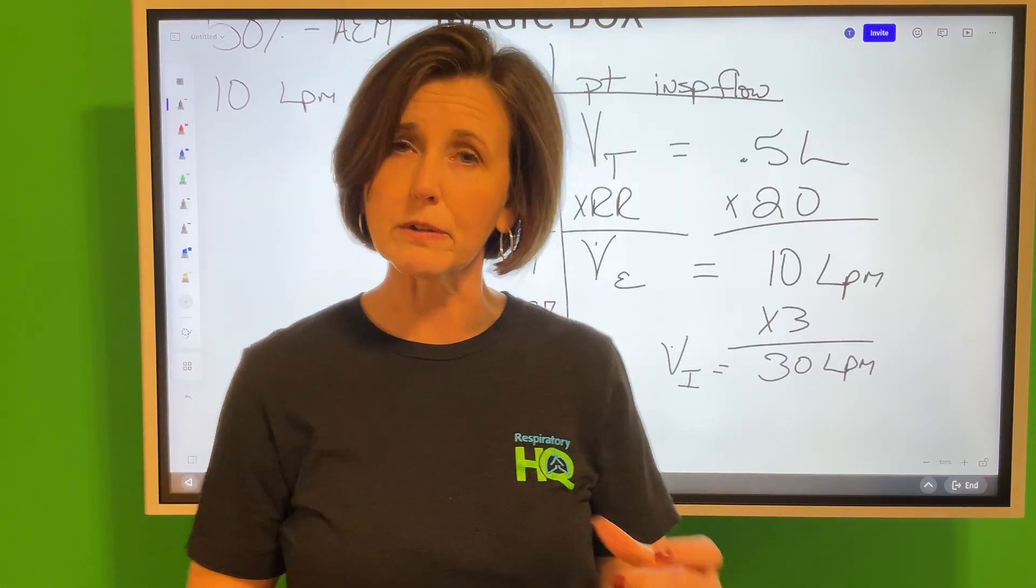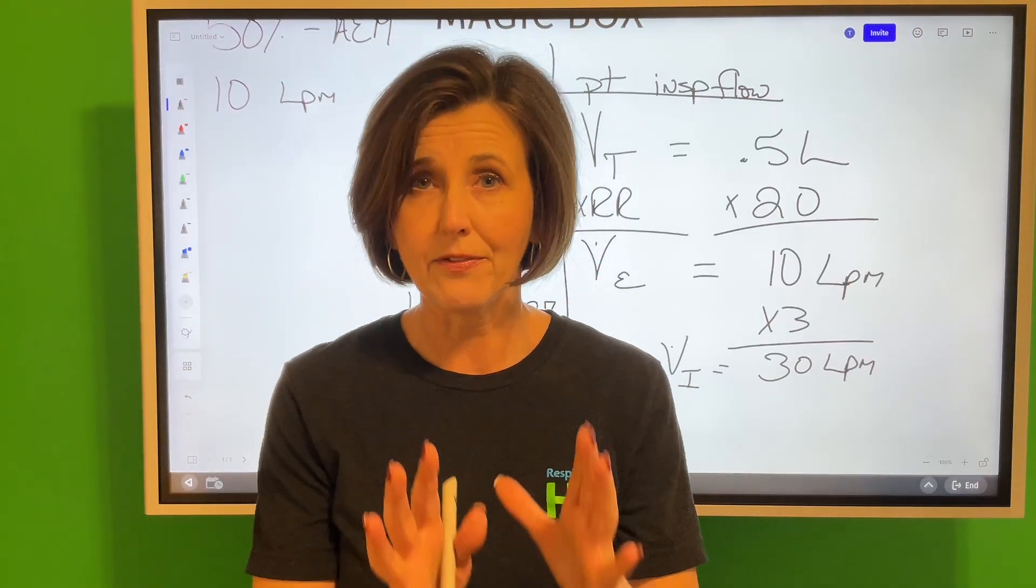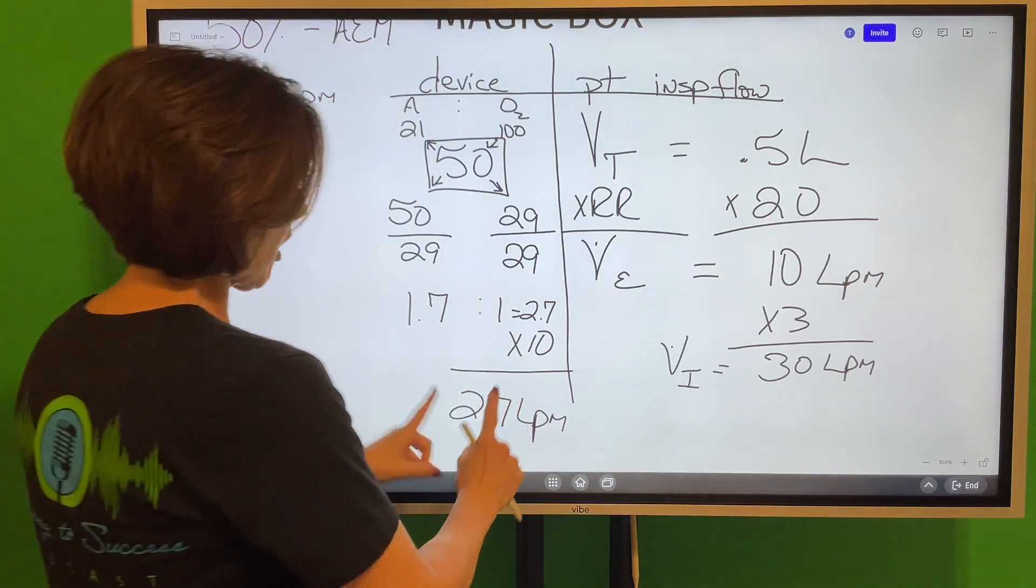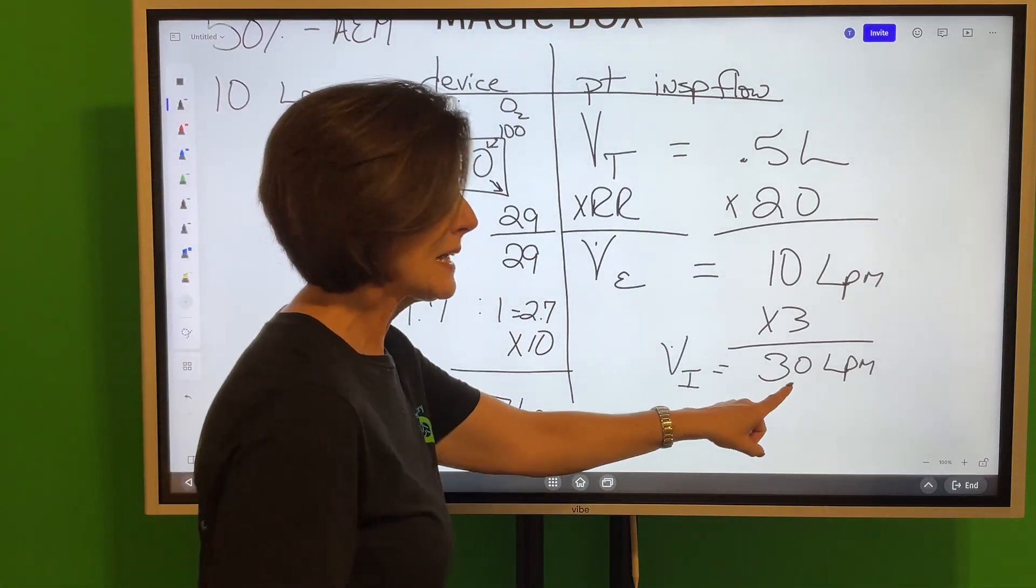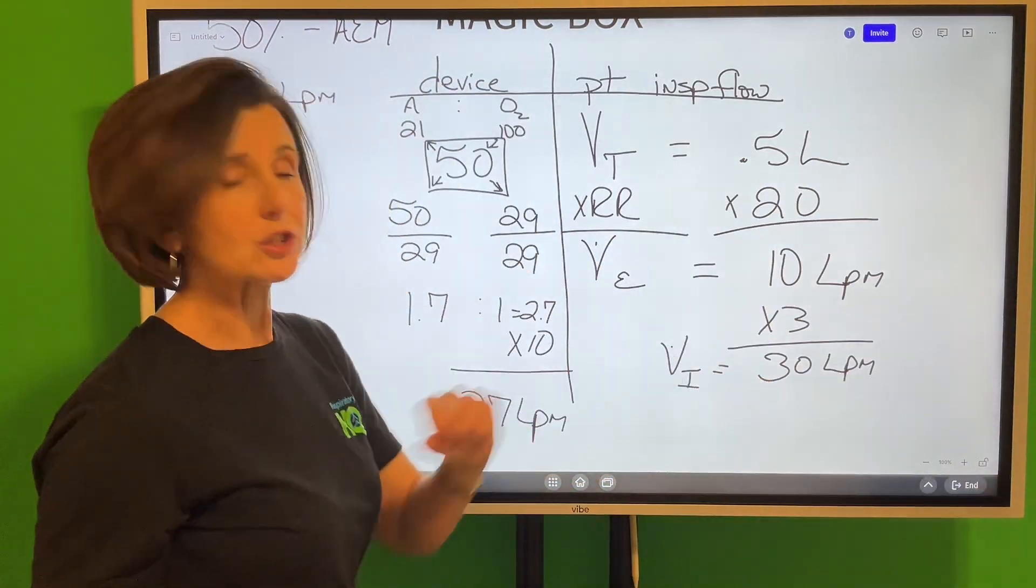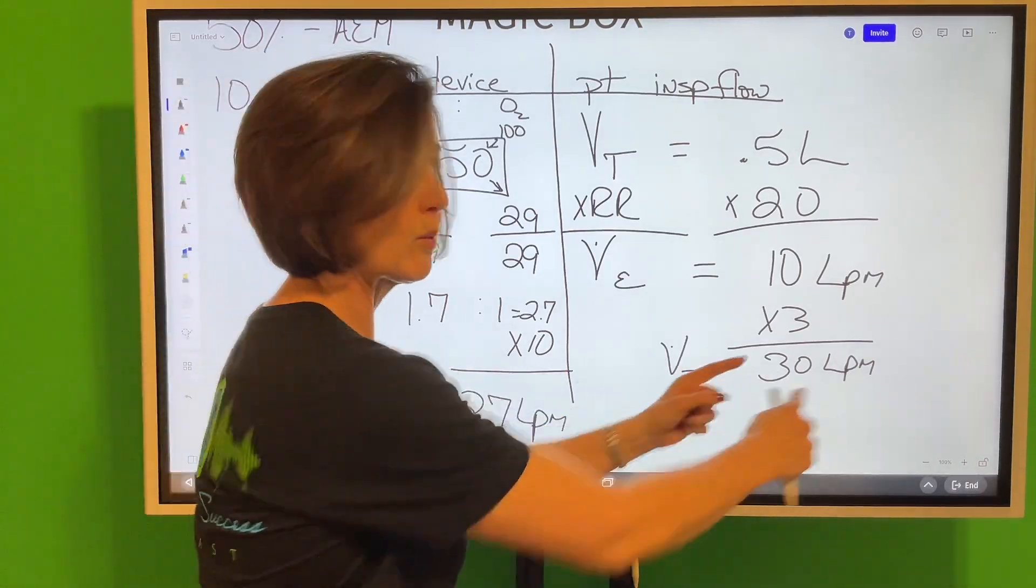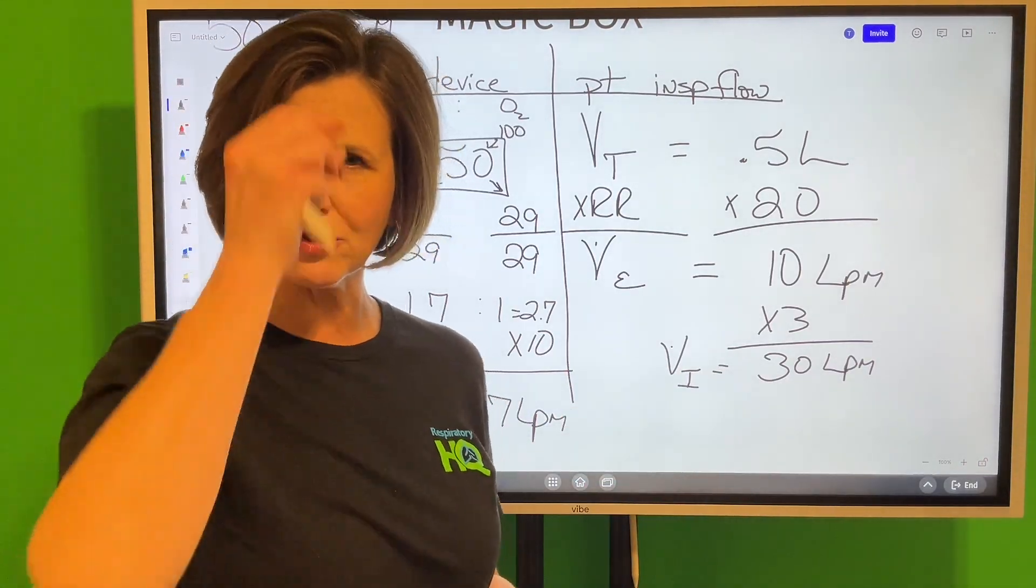That's not how these systems are supposed to work. They're supposed to be a precise FiO2. They are a precise FiO2 when our device meets or exceeds the patient's inspiratory flow, and right now we're short.